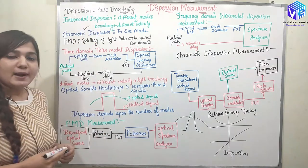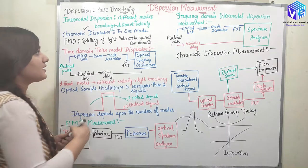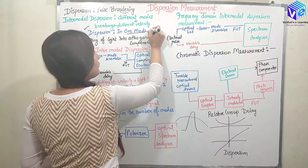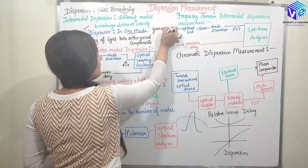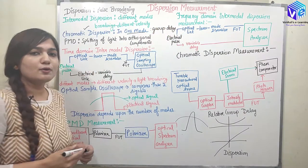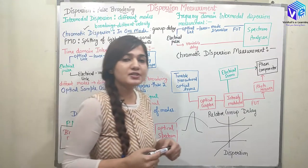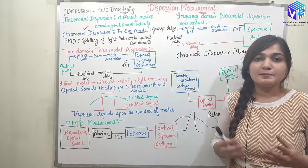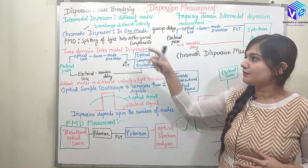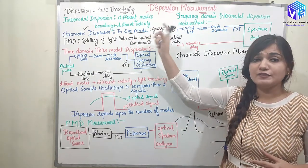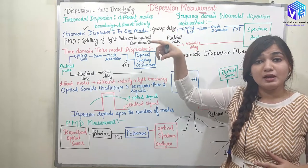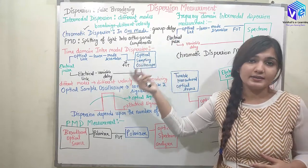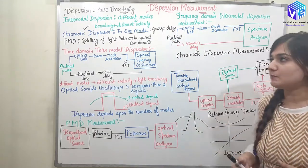Then we have chromatic dispersion. Chromatic dispersion is present in only one mode and it is present due to the group delay. We have chromatic dispersion when we have different elements of different wavelengths but the same mode. Different elements of different wavelengths travel with different speeds inside the optical fiber, and at the end they cause pulse broadening.